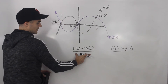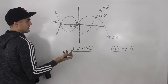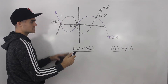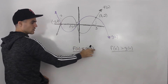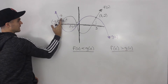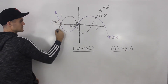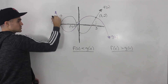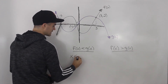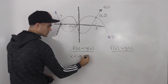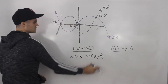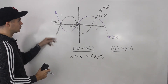Let's start with: when is f of x less than g of x? You basically have to look for when the graph of f of x is below the graph of g of x, because if it's below it, the y-values are less than the y-values of g of x. Notice in the first interval from negative infinity to negative five, f of x is below g of x. So that's one interval — when x is less than negative five, or in interval notation, from negative infinity to negative five.